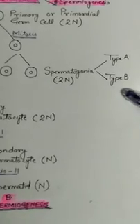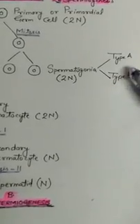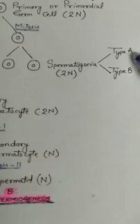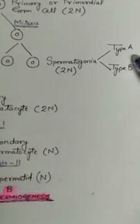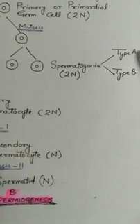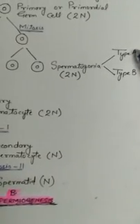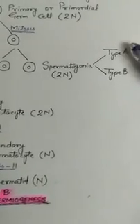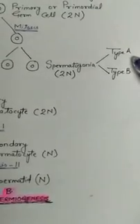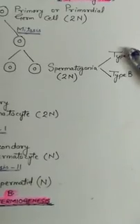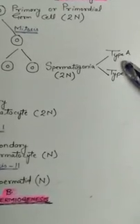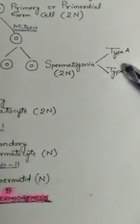These round diploid cells are called sperm mother cells or spermatogonia. Spermatogonia are of two types: Type A and Type B. Type A spermatogonia act as stem cells — these cells only undergo multiplication to form more spermatogonia, which is the reason that human males never undergo the process of menopause.